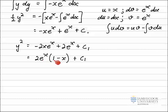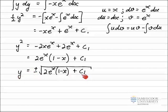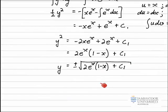Just quickly check that. 2 e to the x times 1 is 2 e to the x, and 2 e to the x times minus x is that minus x e to the x. I need to take the square root to get y by itself, remembering to take the square root gives you a plus or minus answer. So it's plus or minus now the square root of 2 e to the x times 1 minus x plus the arbitrary constant c1. Without any more information, that's where I would stop, and this is now a general solution.